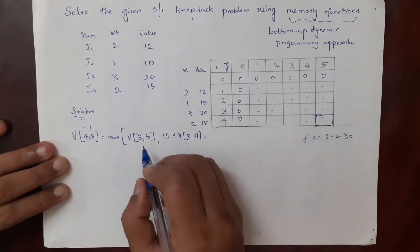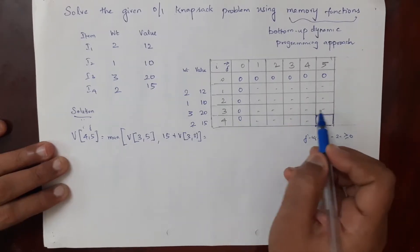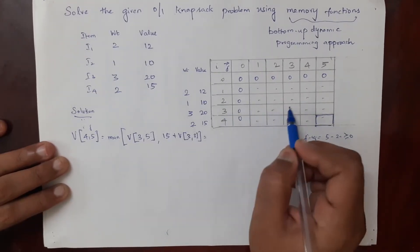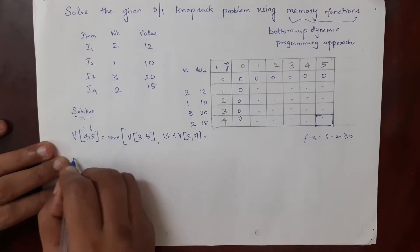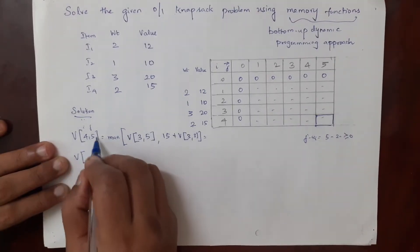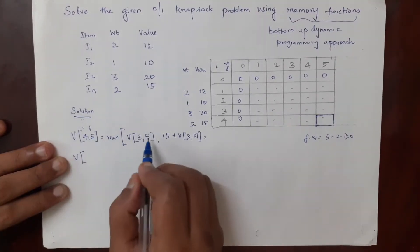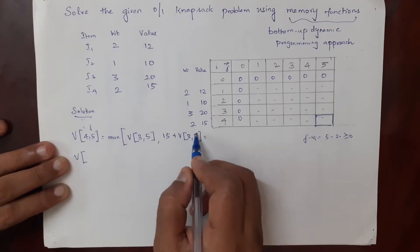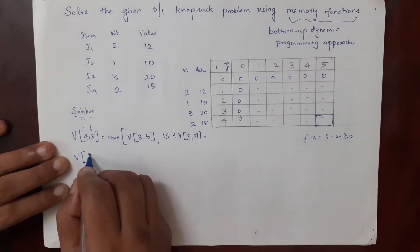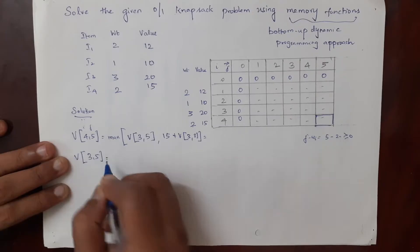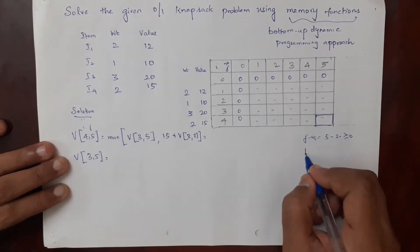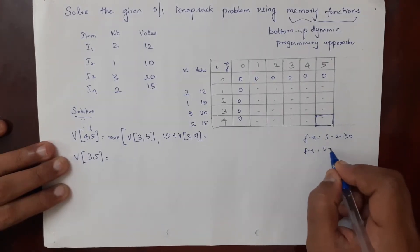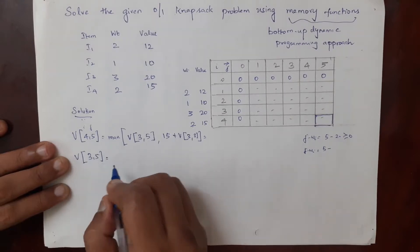We have to check cell 3 comma 5 — the entry is null — and also 3 comma 3 — the entry is also null. So in order to find v of 4 comma 5, we first have to find v of 3 comma 5, and then we have to find v of 3 comma 3.